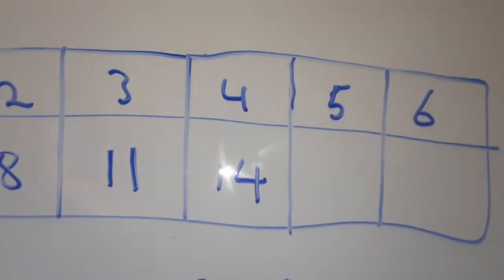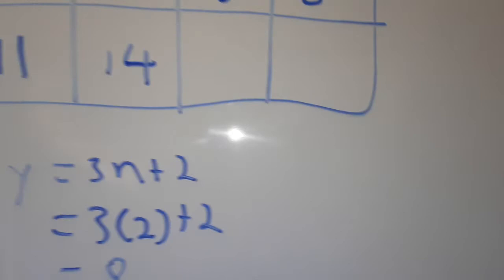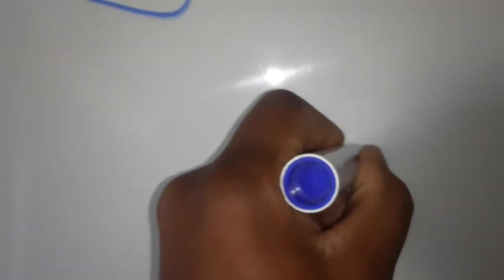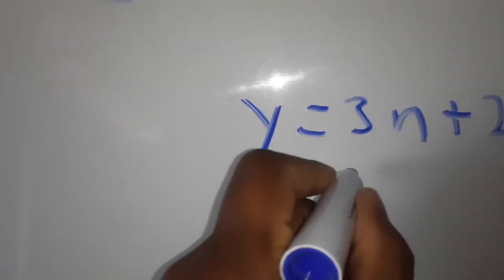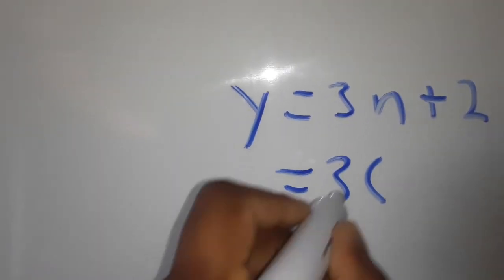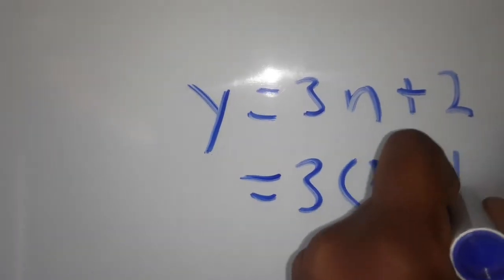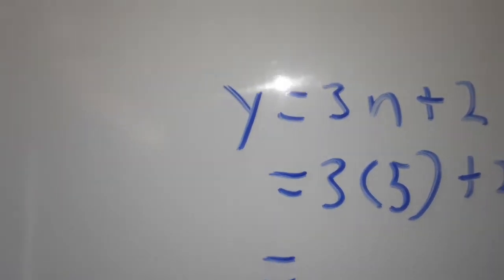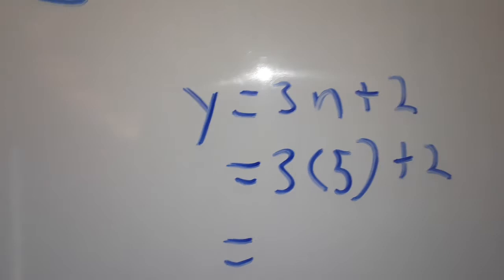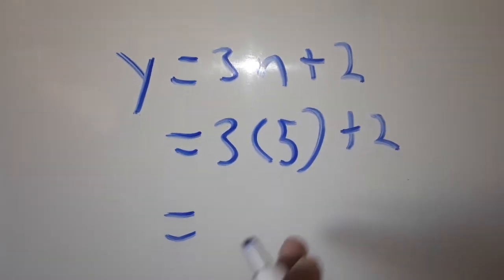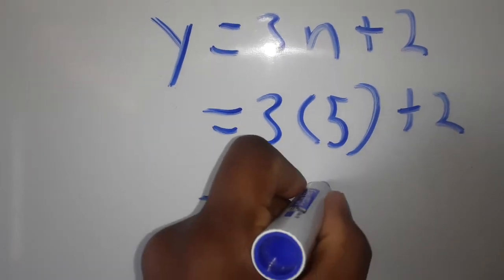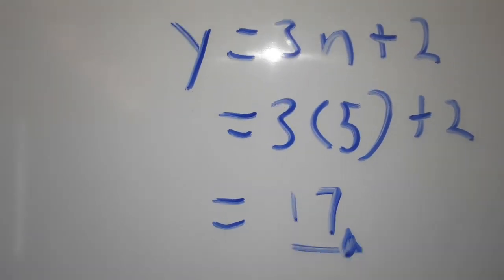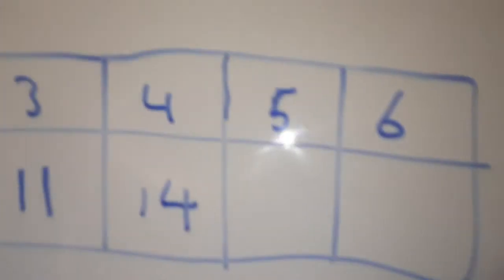We have another one — when n is 5. So y is equal to 3n plus 2. We put 5 in brackets plus 2. 5 times 3 gives us 15, plus 2 gives us 17. So our answer is 17 for n = 5.